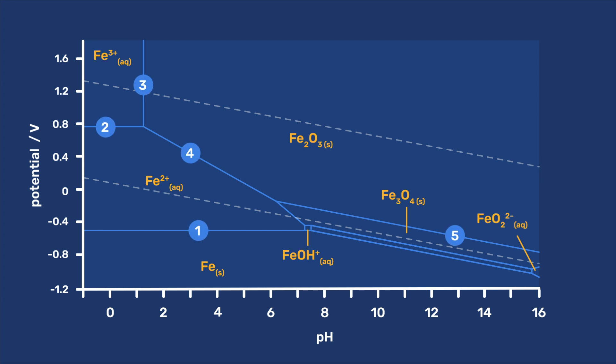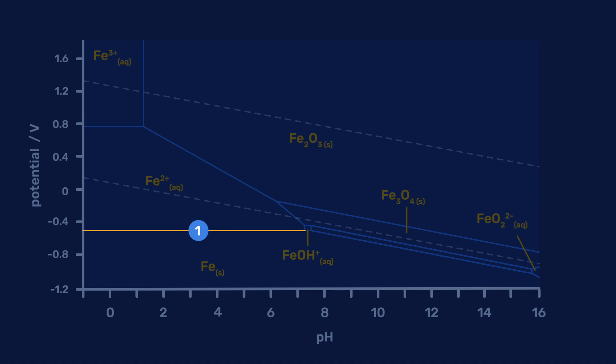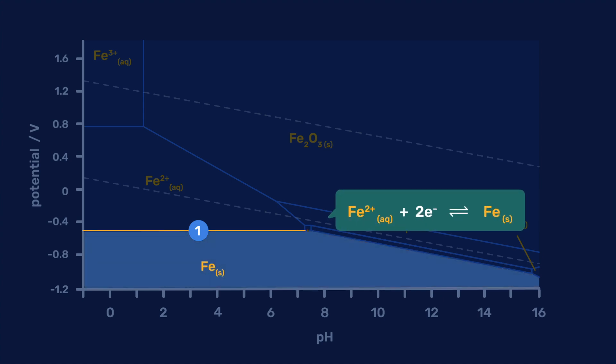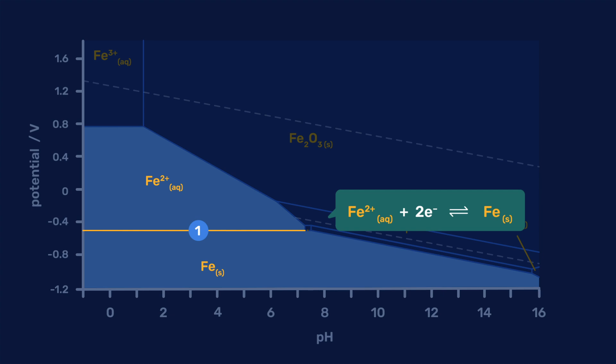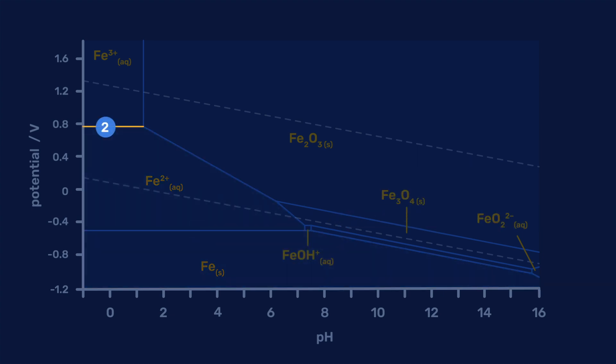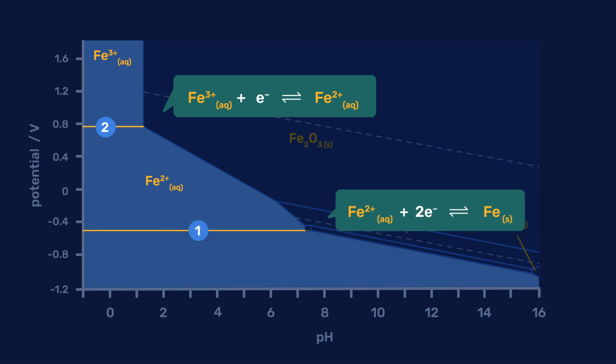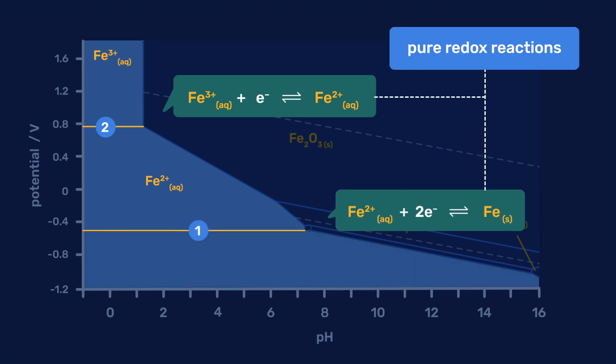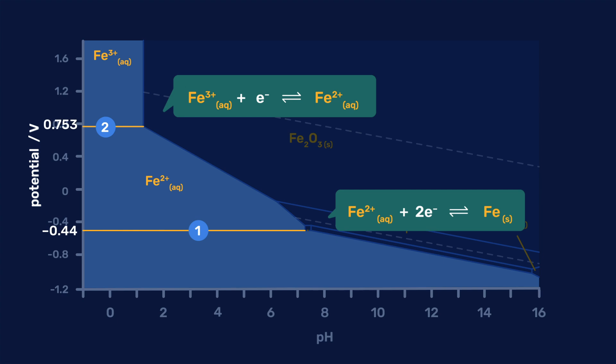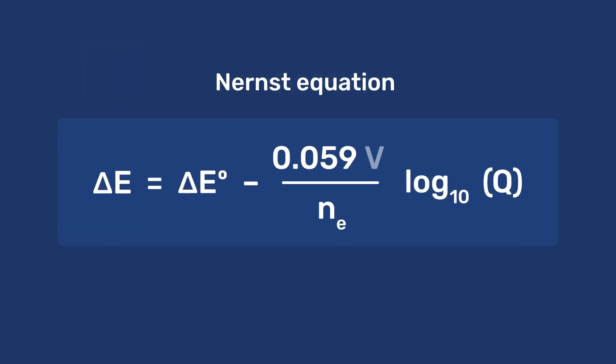But how are the phase boundary lines of a Pourbaix diagram derived? The line indicated by number 1 represents the equilibrium between iron and iron 2 plus ions, whereas the line indicated by the number 2 represents the equilibrium between iron 2 plus and iron 3 plus ions. Both these equilibrium reactions are of pure redox nature.